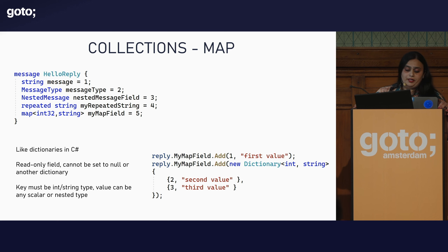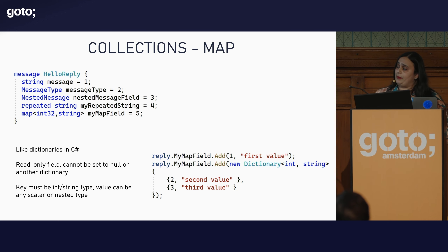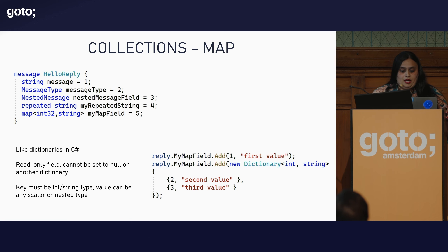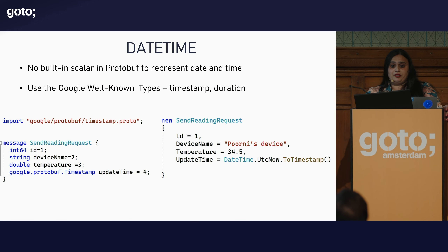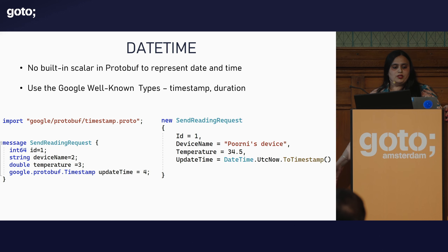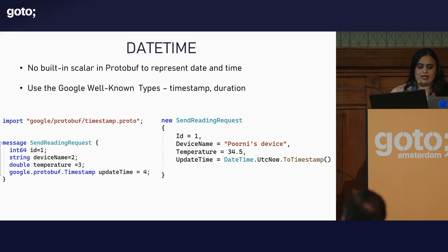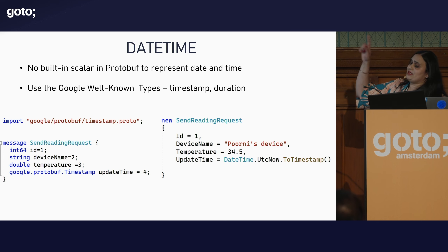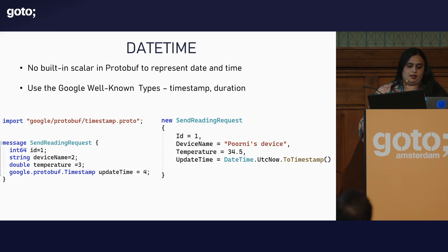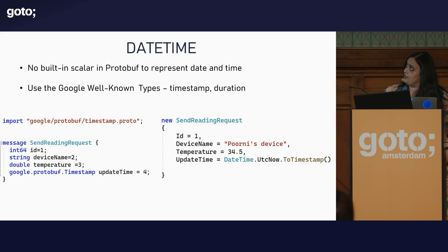You also have dictionary-like things in protobuf using the `map` keyword. Again, it has no setter, only a getter, so you can only append. The key always needs to be an integer or string type, but the value can be anything. There is no DateTime supported natively, so we need to bring in Google well-known types. Using the `import` keyword and the path, you import `timestamp.proto` which gives you access to timestamp and duration protobuf types. You can convert any .NET-based DateTime into a Timestamp or Duration — the underlying classes are Google protobuf types.